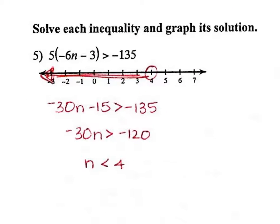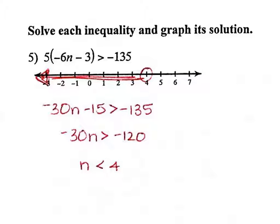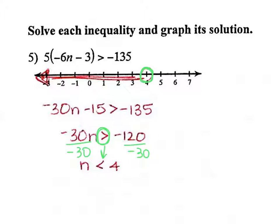Question 5 is where we start with inequalities. Remember, there are two rules: if you divide or multiply by a negative number, it flips the sign, and your answer has to end on the left side. The first thing I did was distribute the 5, then added 15 to both sides to get negative 20. When I divide by negative 30, since that's dividing by a negative number, I had to flip the sign around, giving n is less than 4. Because it's strictly less than, I did an open circle and shaded to the left. Open circles happen when you have greater than or less than.